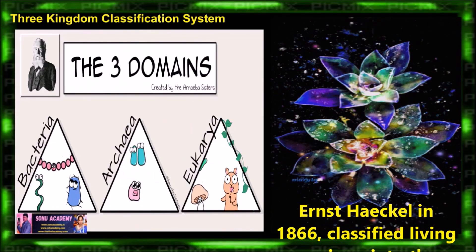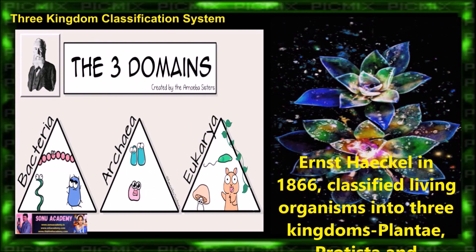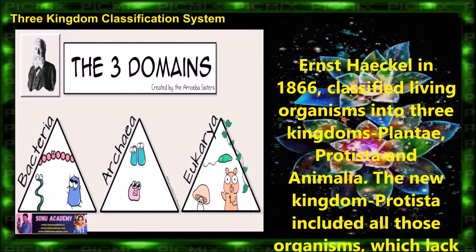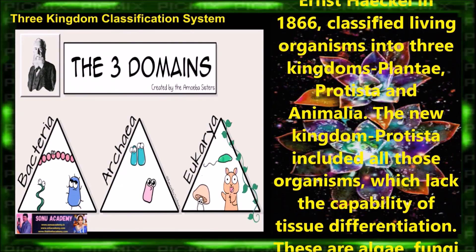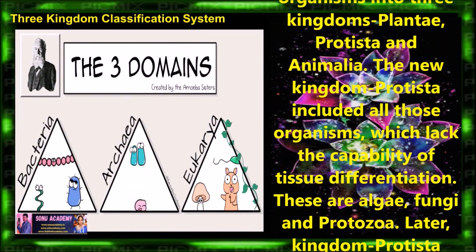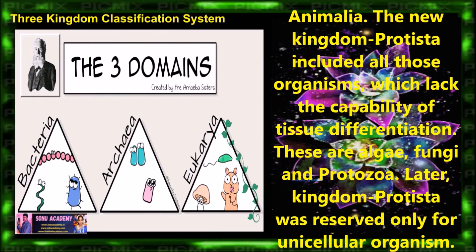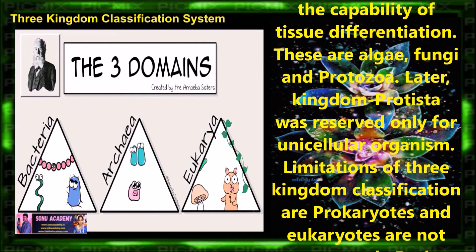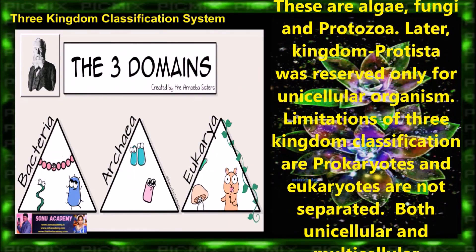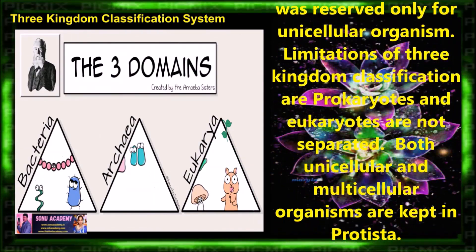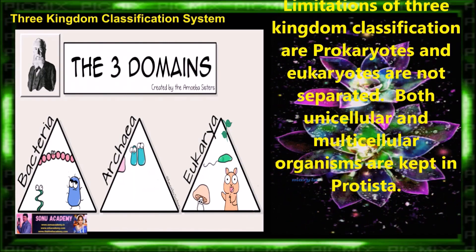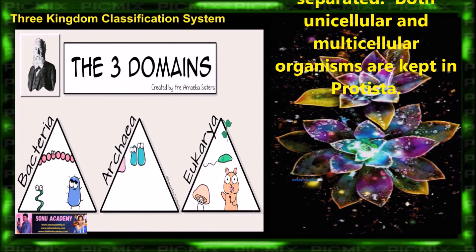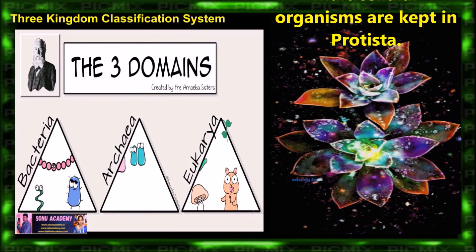Later on, the three kingdom classification system was developed by Ernst Haeckel in 1866. He classified living organisms into three kingdoms: Plantae, Protista and Animalia. The new kingdom Protista included all organisms which lack the capacity of tissue differentiation — such as algae, fungi and protozoa. Later, the kingdom Protista was reserved only for unicellular organisms. The limitations of this system are that prokaryotes and eukaryotes are not separated, and both unicellular and multicellular organisms are kept in Protista.